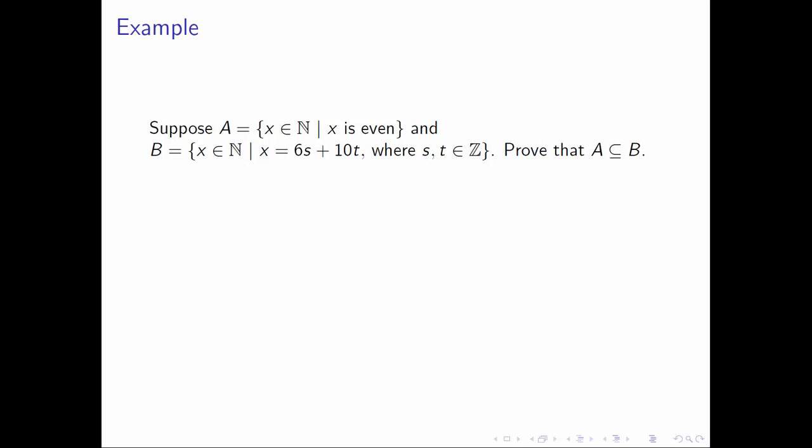So for this, let's start with an example. Let's suppose that A is the set of all natural numbers that happen to be even, so P of X is X is even, and B is the set of all natural numbers that can be written in this particular form. It can be written as 6S plus 10T, where the numbers S and T are integers. What we want to prove is that the set A is a subset of the set B.